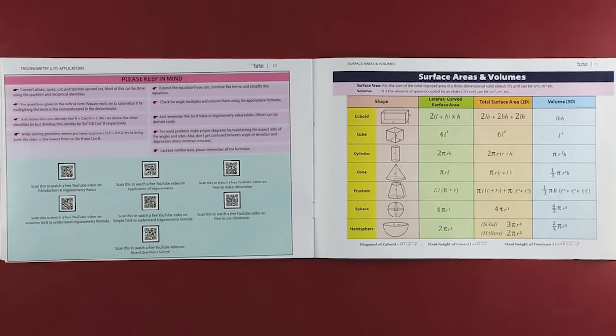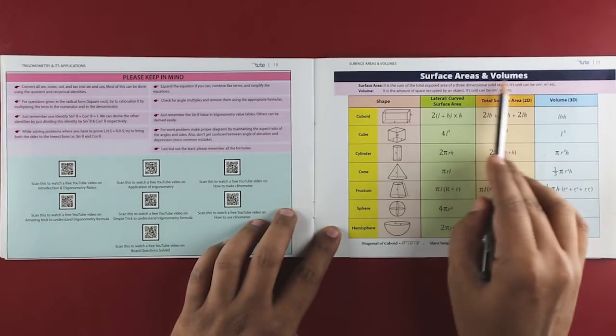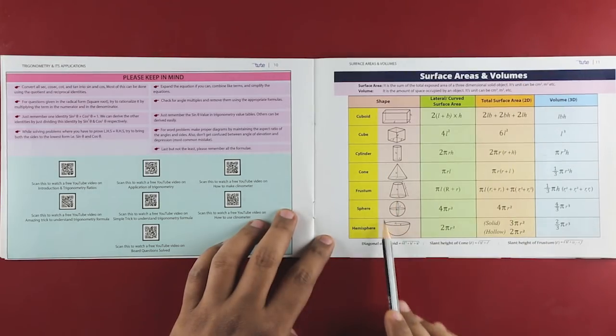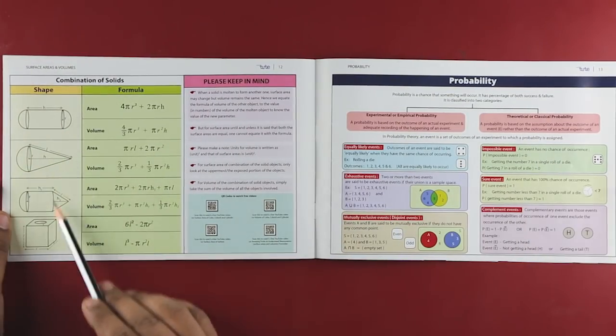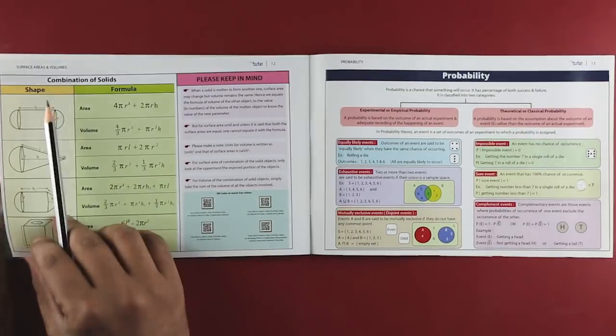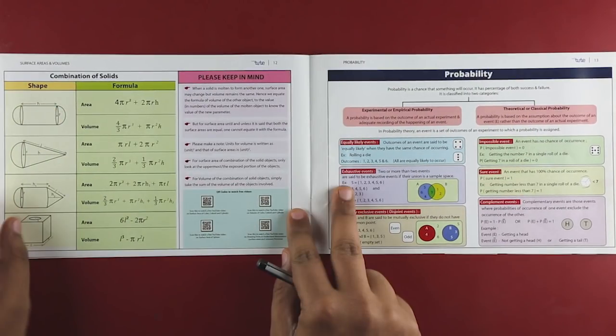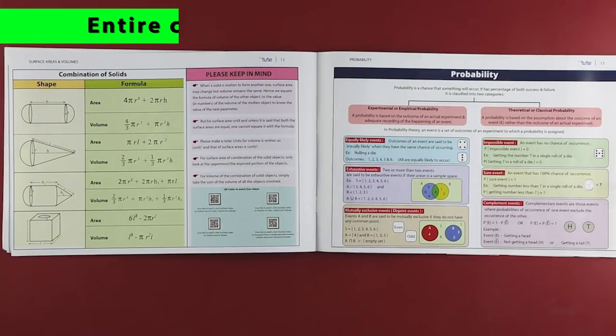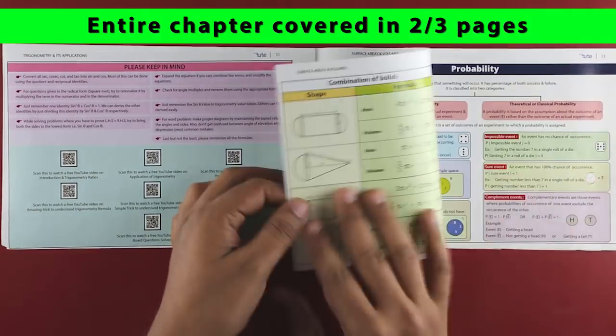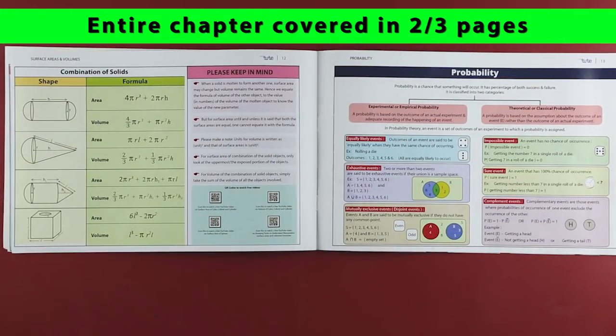Let's take another example: the chapter on surface areas and volumes. All the formulas for individual and combination of shapes are listed in one sheet for quick reference. Basically, the entire chapter is summarized in just two to three pages, covering all the important aspects.